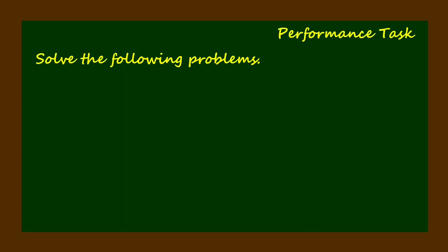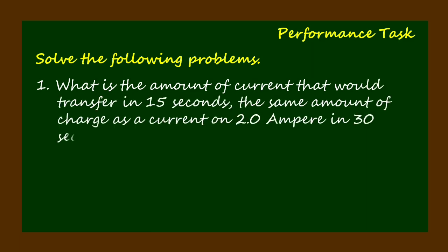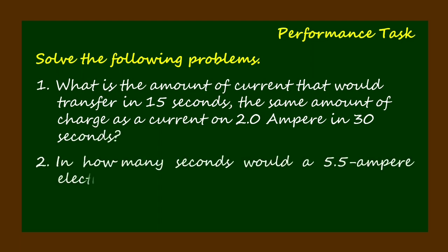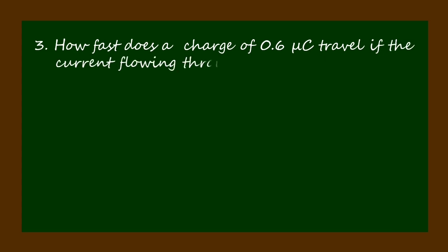Number one: What is the amount of current that would transfer in 15 seconds the same amount of charge as a current of 2.0 ampere in 30 seconds? Number two: In how many seconds would a 5.5 ampere electric current flow in a conductor if the magnitude of charge is 9 million nano coulomb? Number three: How fast does a charge of 0.6 micro coulomb travel if the current flowing through a cross-section is 0.5 ampere?